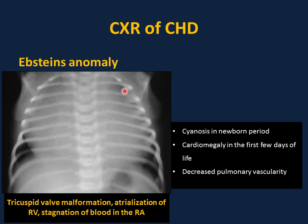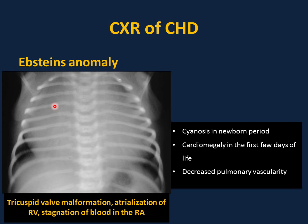This chest x-ray shows a newborn with cyanosis. There is severe cardiomegaly filling all the chest, but the lung fields are clear with decreased or diminished pulmonary vascularity bilaterally. This is a classic presentation of Ebstein's anomaly — there is right-sided obstruction due to malformation and defect in the tricuspid valve, and depending on the degree of regurgitation, the right atrium keeps enlarging due to stagnation of blood.